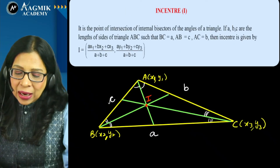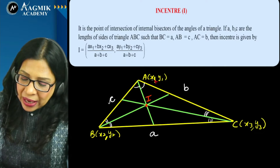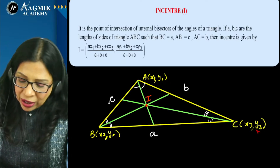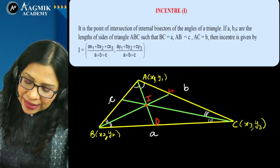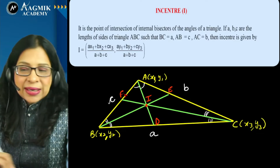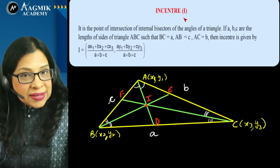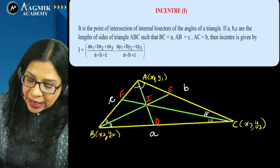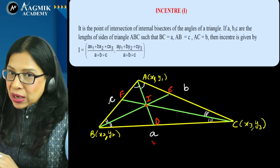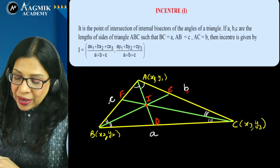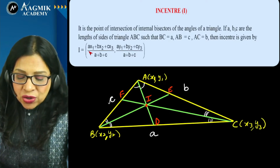Now the incentre. Angle bisectors of a triangle meet at the incentre I. For triangle ABC with vertices A(x1,y1), B(x2,y2), C(x3,y3), first find lengths of sides using the distance formula: small a (opposite to A = length BC), small b (opposite to B = length AC), small c (opposite to C = length AB). Then coordinates of incentre are ((ax1 + bx2 + cx3)/(a+b+c), (ay1 + by2 + cy3)/(a+b+c)).